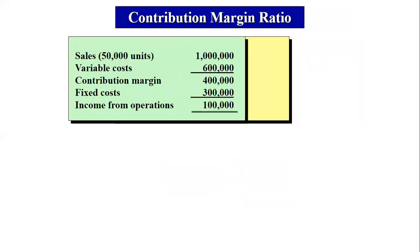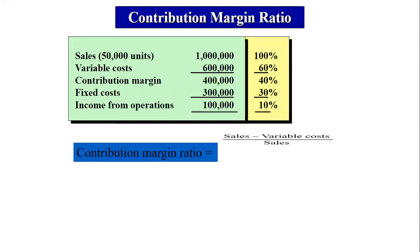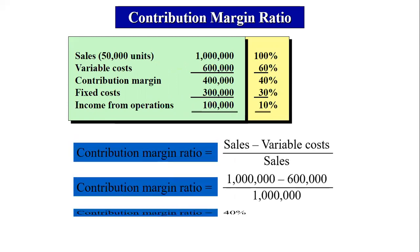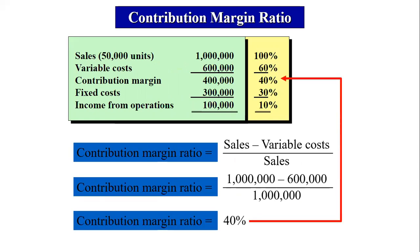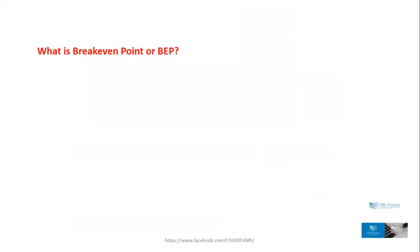Now for the calculation of the contribution margin ratio — this appears in multiple choice questions and even in the CPA exam. Sales is at 100%, variable cost is 60% (representing 600,000), so the contribution margin ratio is 40%. The formula is: sales minus variable cost, divided by sales — so 400,000 divided by 1,000,000 equals 40%.